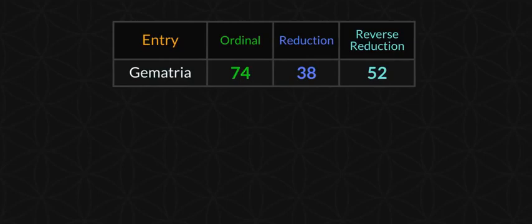Gematria — very interesting. Look at these numbers: we have the ordinal cipher, ABC = 1-2-3; we have reduction — when it reaches J and so on, J is 10, you just add it together and reduce to a single digit. Add them all together — that's the reduction cipher. Reverse the alphabet: Z is 1, A is 26. Do the same thing with the reduction. Look — 74, 38, 52 — gematria.